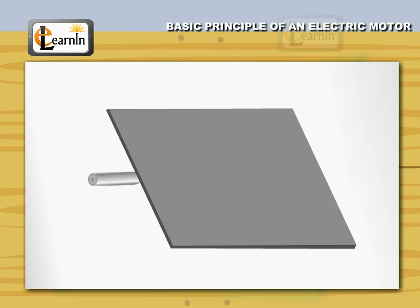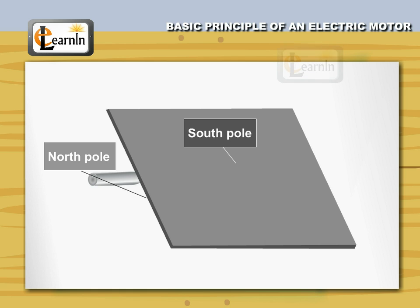This makes the front face of the coil a south pole and the back face a north pole. Thus, a current carrying rectangular coil behaves as a magnet.